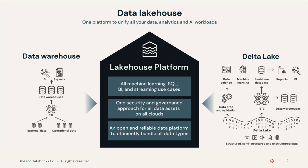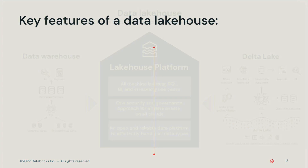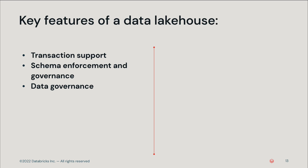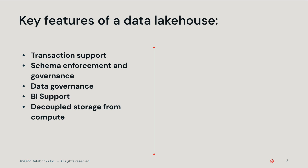Data lake houses like the Databricks lake house platform offer several key features, such as transaction support, including ACID transactions for concurrent read-write interactions. Schema enforcement and governance for data integrity and robust auditing needs. Data governance to support privacy regulation and data use metrics. BI support to reduce the latency between obtaining data and drawing insights. Additionally, the data lake house offers decoupled storage from compute, meaning each operates on their own clusters, allowing them to scale independently to support specific needs.